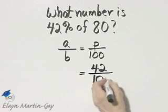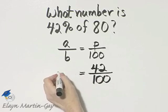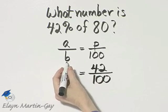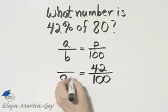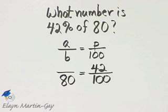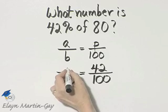I still have the 100. Base, remember, normally appears after the word of, so of 80. Our base is 80, and we're looking for the amount. I'll call that A.